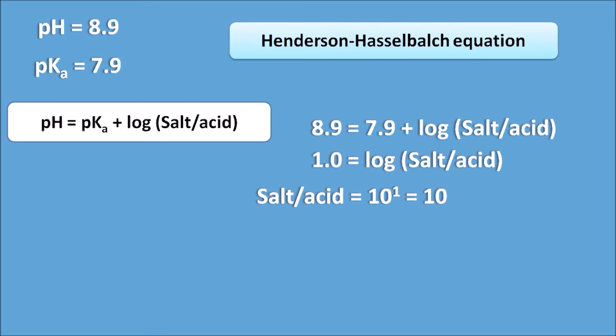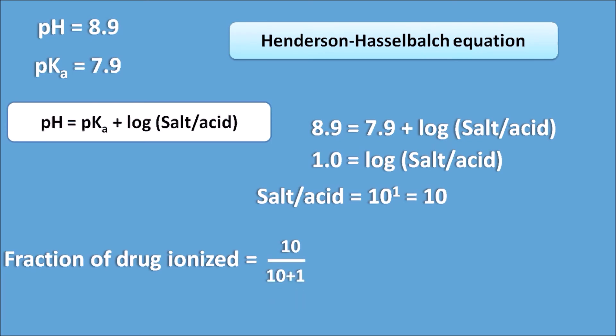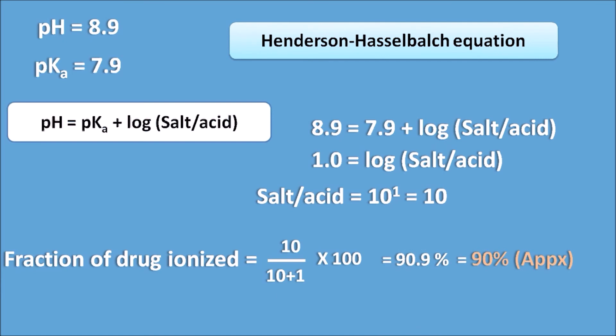The percentage of the drug ionized is calculated as 10 / (10 + 1) × 100, which gives 90.9%, or approximately 90%. So this is the answer for the given question.